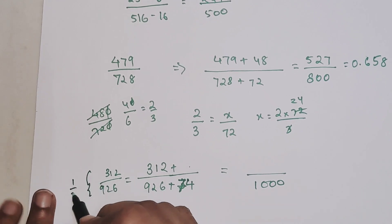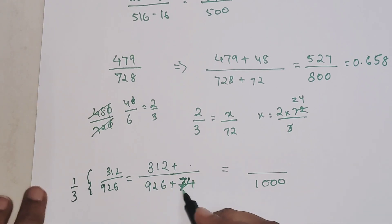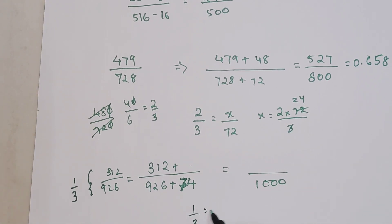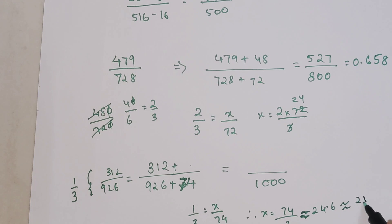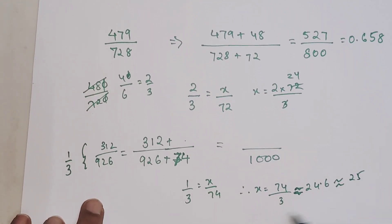Now again, 1/3 = x/74, so therefore your x comes out to be 74/3, which is very close to 24.6, so I can round it off and make it 25. You don't have to worry.